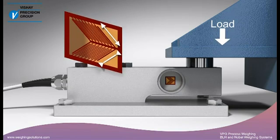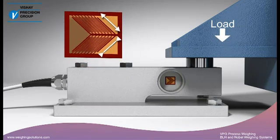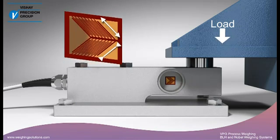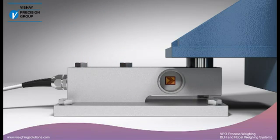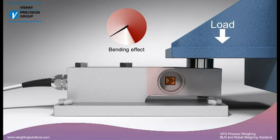They are stretched or compressed as the web is sheared by the load. The gauges are designed to measure the shear strains in the web. In a simple shear beam, there are also bending strains present which contribute to the output.